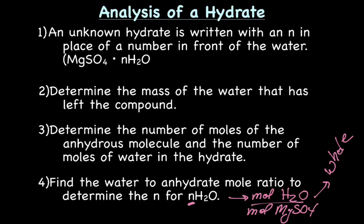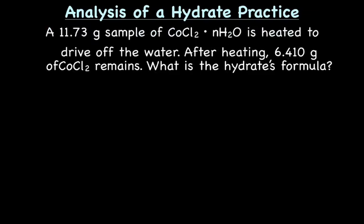So next step is let's just try a problem. Let's try a practice problem. So we're going to start with an 11.73 gram sample of an unknown hydrate. So we know we have cobalt-2 chloride. We don't know how much water is attached. The sample is then heated to drive off the water. After heating and cooling, the mass is 6.410 grams. And now that mass is just for the cobalt-2 chloride. So we want to figure out the hydrate's formula.